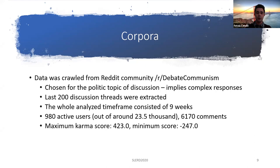We extracted the last 200 discussion threads. The whole analyzed period consists of nine weeks. There were 990 active users out of a total of around 23,000, and a total of around 6,000 comments. The maximum karma score was 123 and the minimum was negative 247.